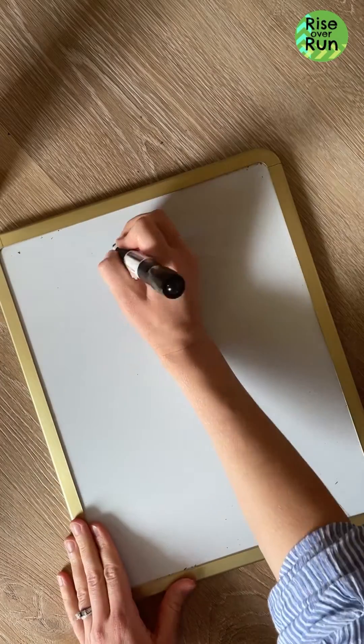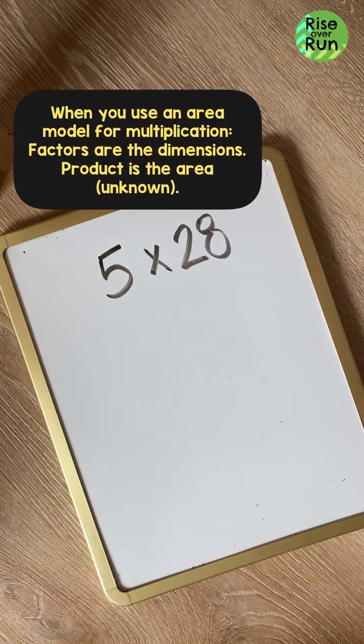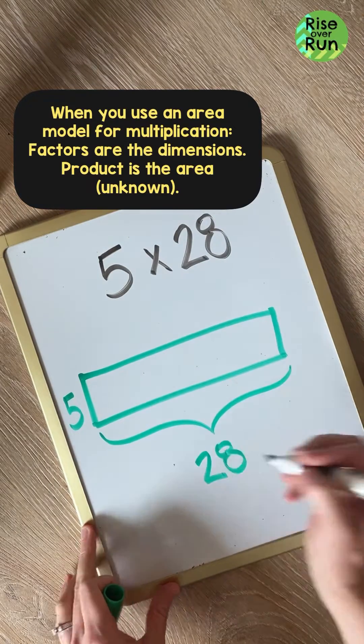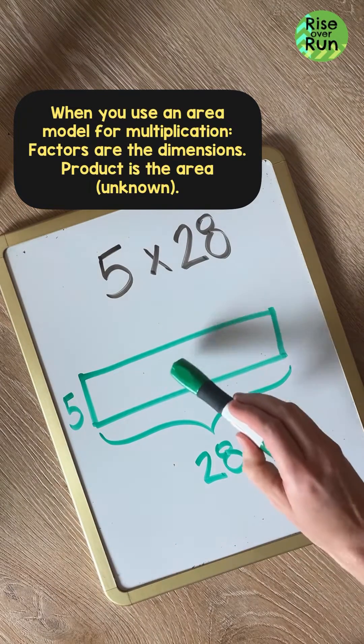Let's start with the problem 5 times 28. To use the area model for multiplication, the factors are the dimensions and the product will be the area. That's what we don't know yet.